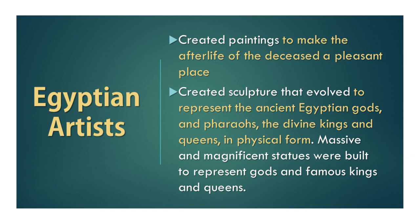Now, let's talk about the Egyptian artist. Most of the paintings were created to represent the belief of the ancient Egyptians in the afterlife. Created paintings were used to make the afterlife of the deceased a pleasant place. Sculptures evolved to represent the ancient Egyptian gods and pharaohs, the divine kings and queens in physical form, and massive and magnificent statues were built to represent gods and famous kings and queens. Most of what we see in ancient Egyptian art is about Egyptian gods and their deceased pharaohs.